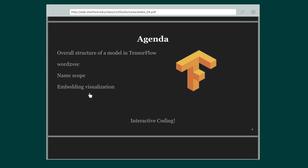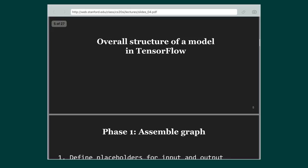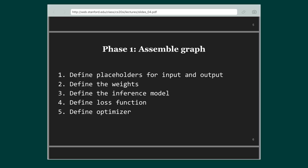The overall structure of our model in TensorFlow — as we looked at in the earlier lecture — involves defining placeholders for inputs and outputs, defining the weights, and looking at the dimensionality of the weight matrices. We then define the actual inference model. In the case of linear regression, that would be y = xW + b, the bias term. We define the loss function and instantiate an optimizer with the training op as optimizer.minimize(loss).